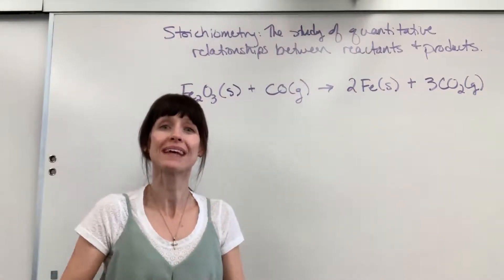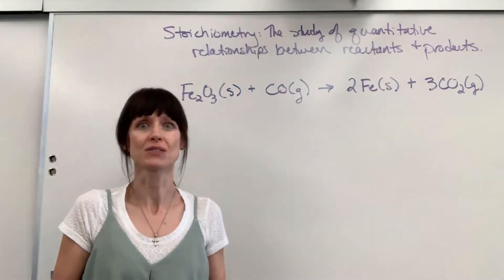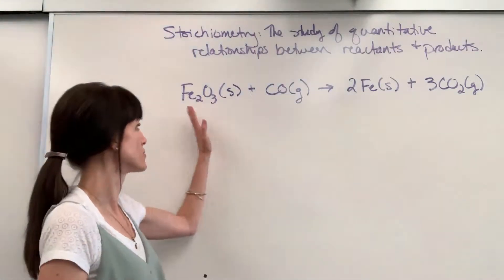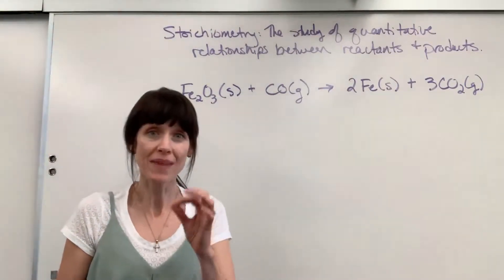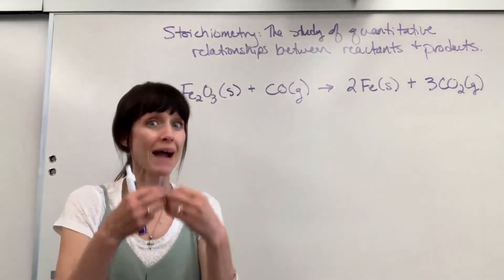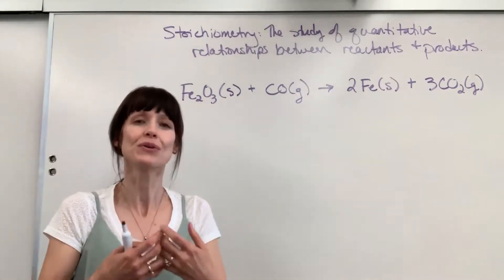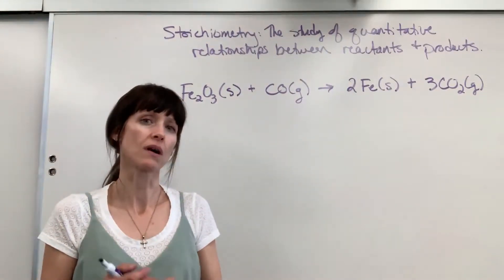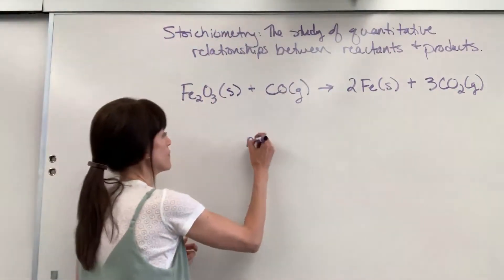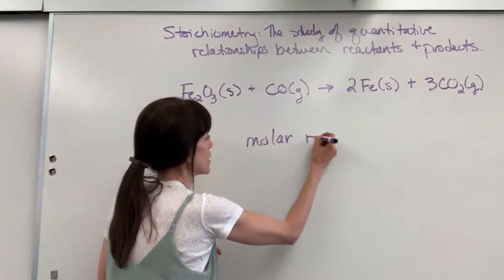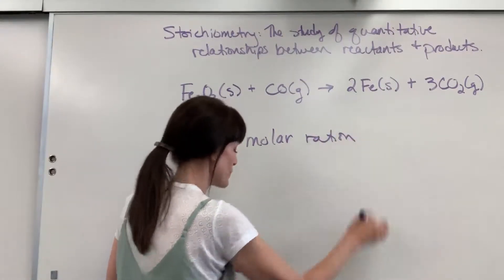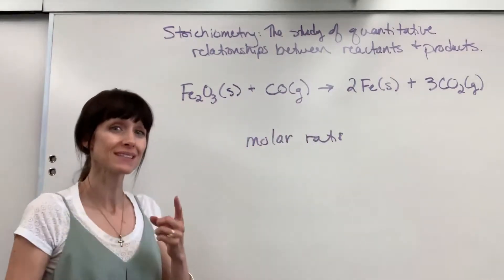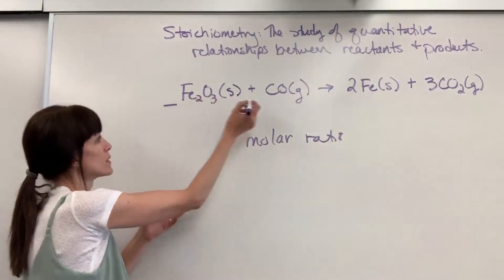We're looking at amounts. And here is the beauty of stoichiometry: you can have information about just one compound, one item, and from that one piece of information you can find the amounts — quantitative — you can find the amounts of everything else. The heart of stoichiometry is what are called molar ratios. Molar ratios are the relationships between all of the compounds based on the molar coefficients.